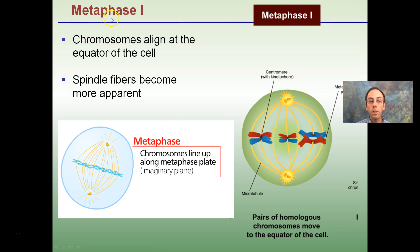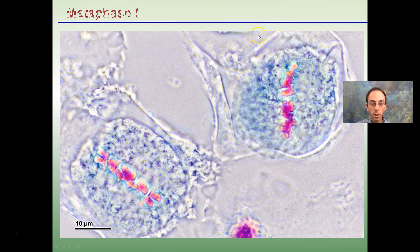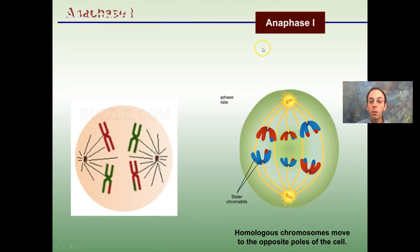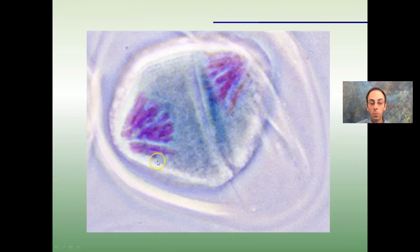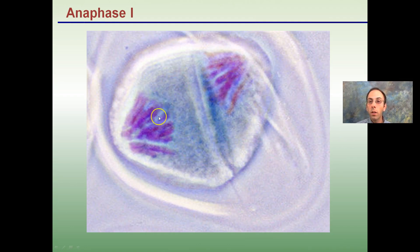In metaphase I, chromosomes align at the equator and spindle fibers become apparent — lining up at the metaphase plate. In anaphase I, chromosomes migrate to the poles. Importantly, the centromeres are not broken here; they remain attached. The chromosomes from mom and dad can be pulled apart, and crossing over that occurred is evident at this stage.